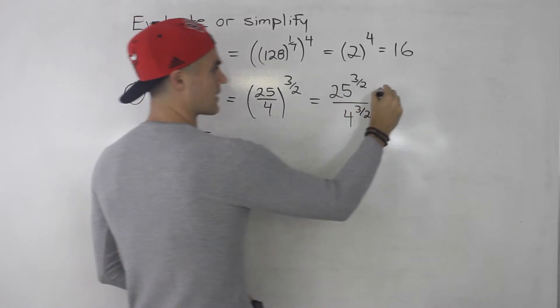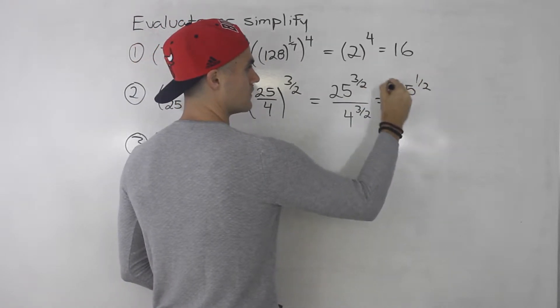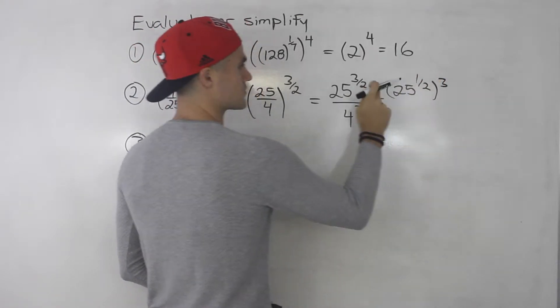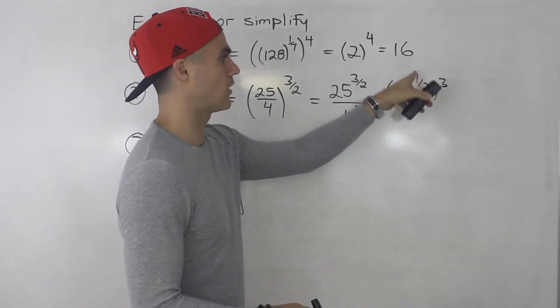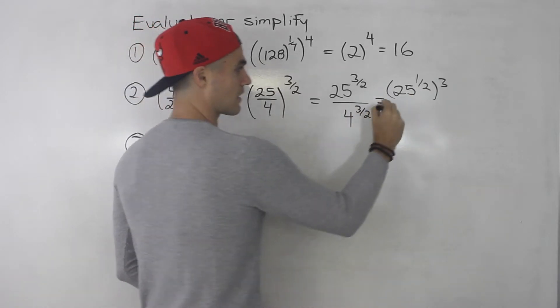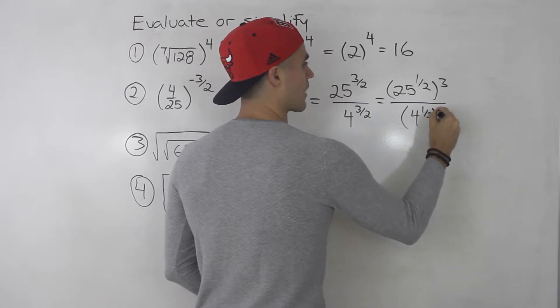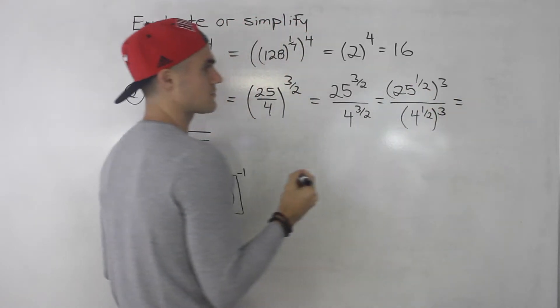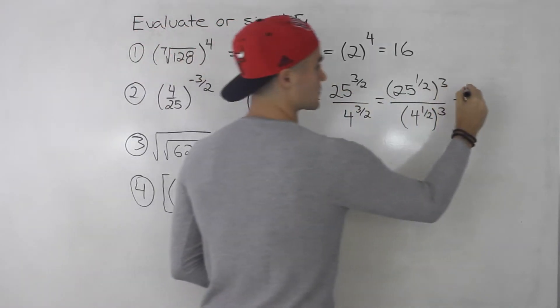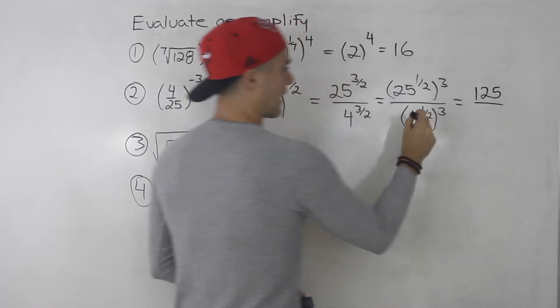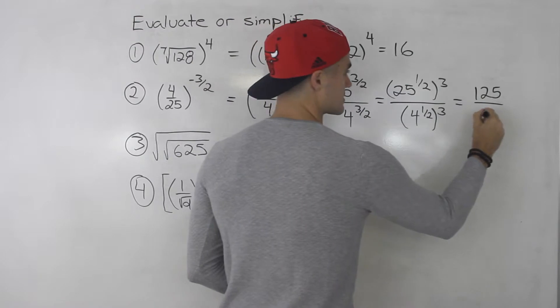And then here, we can break this down. So we could take 25 to the power of a half to the power of 3. So I take that rational exponent and I split it up. I put the numerator outside, then 1 over the denominator inside. Same thing at the bottom. So I'll take 4 to the power of 1 over 2 all to the power of 3. Now 25 to the power of 1 over 2 is 5, right? Square root of 25. And then 5 to the power of 3 gives us 125. And then 4 to the power of a half, or the square root of 4 is 2. Then 2 to the power of 3 is 8.